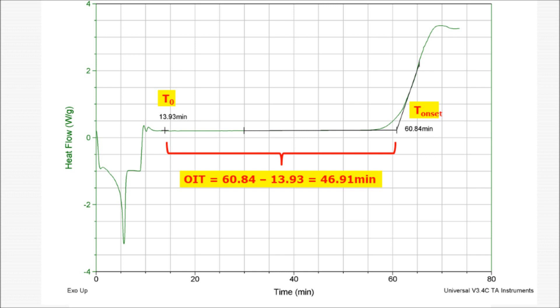After this, calculating the OIT for this membrane is extremely straightforward. Simply subtract T sub 0 from T sub onset, and the result is the value for this material's oxidative inductive time. These calculations are identical for both the standard and high pressure OIT.